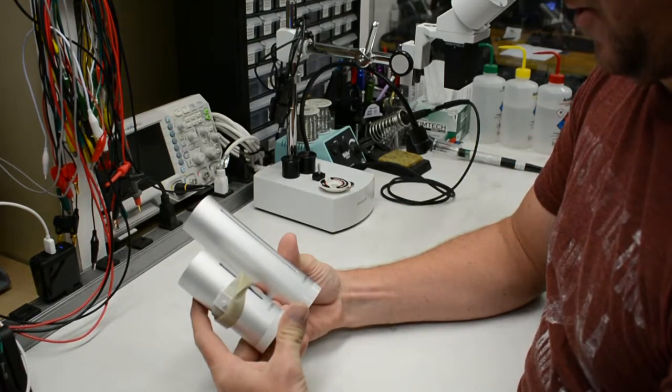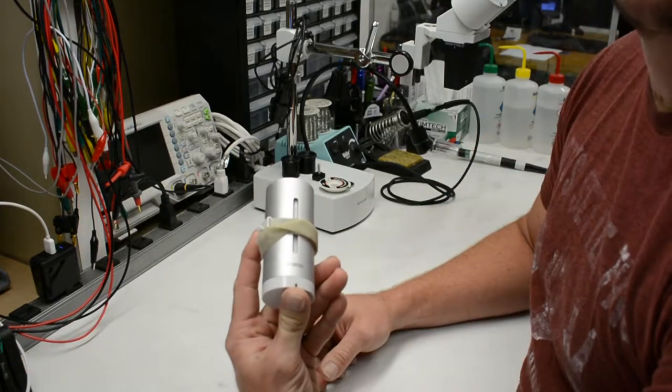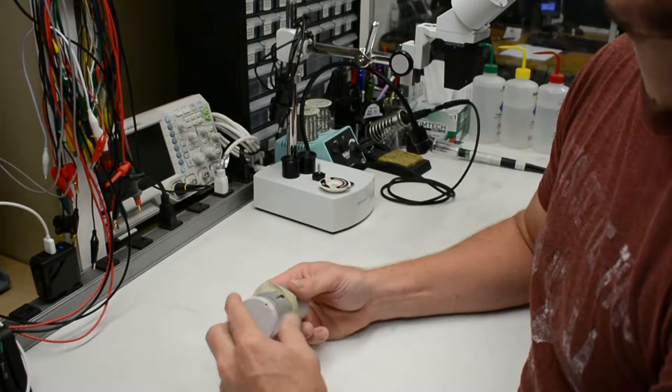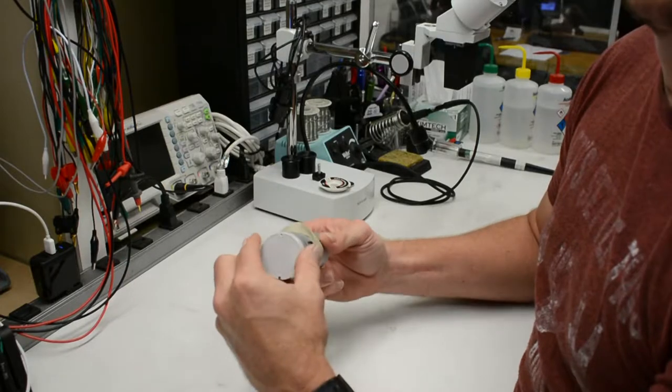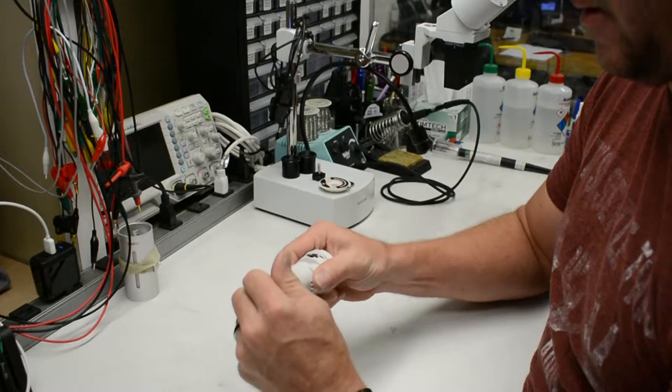First thing I'm going to do is unplug it and start with the outdoor module first because it is the easiest to get halfway into. They've made it simple enough you can literally twist it off, pull it apart, and take the two screws off the top here to pull the batteries out.